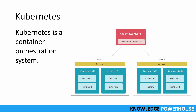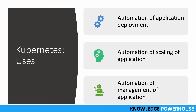There are three main uses of Kubernetes. First is automation of application deployment - you can deploy your application in an automated way using Kubernetes. A container is created, but you need some form of deployment to deploy that container to a node, and Kubernetes can help automate that.